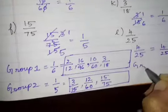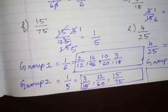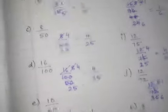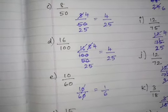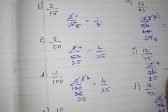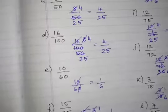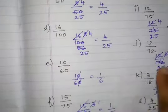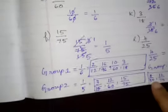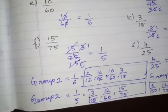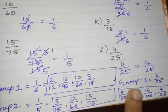Group number 3 has simplest form 4 by 25. What numbers have 4 by 25? We have 8 by 50, 12 by 75, 16 by 100, and 4 by 25. All these numbers belong to group 3.